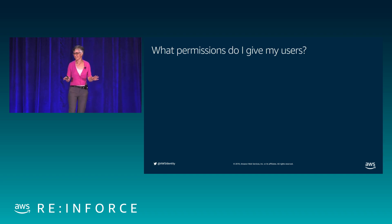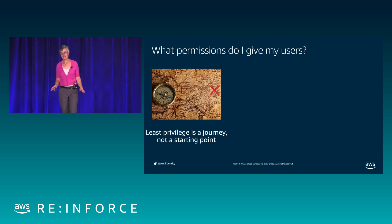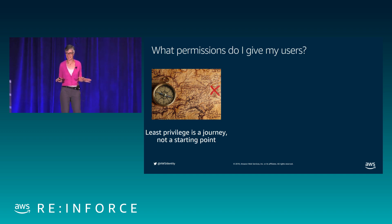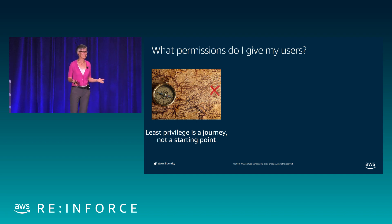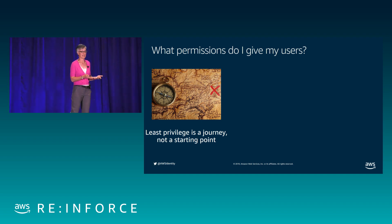In this example, the only situation in which this identity can attach or detach an EBS volume is when the EC2 instance is tagged with a tag key 'department' and the department value is 'development.' This canonical policy shows you the structure and how it breaks down into the question we started with.